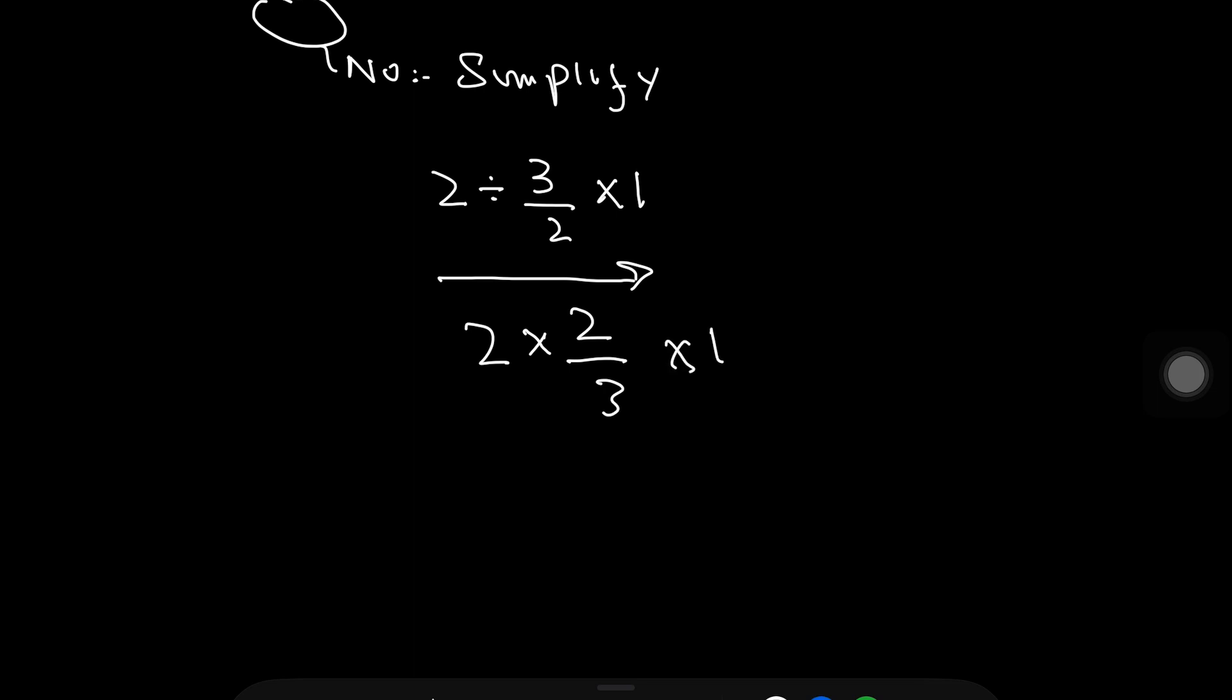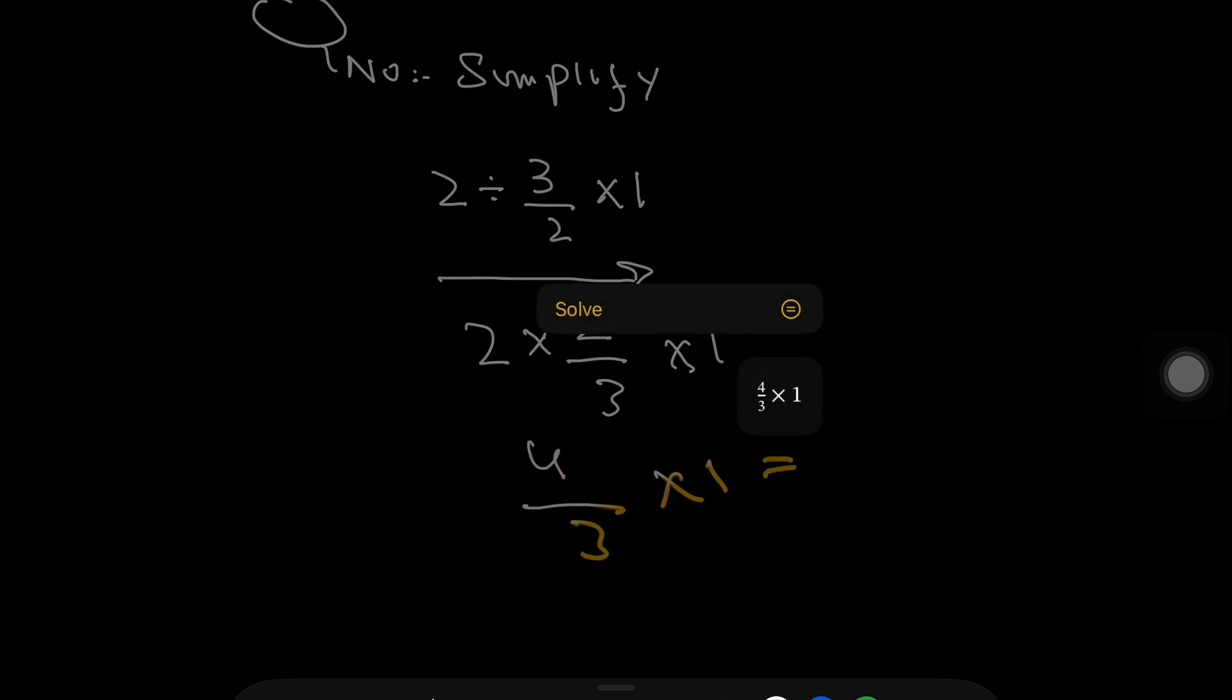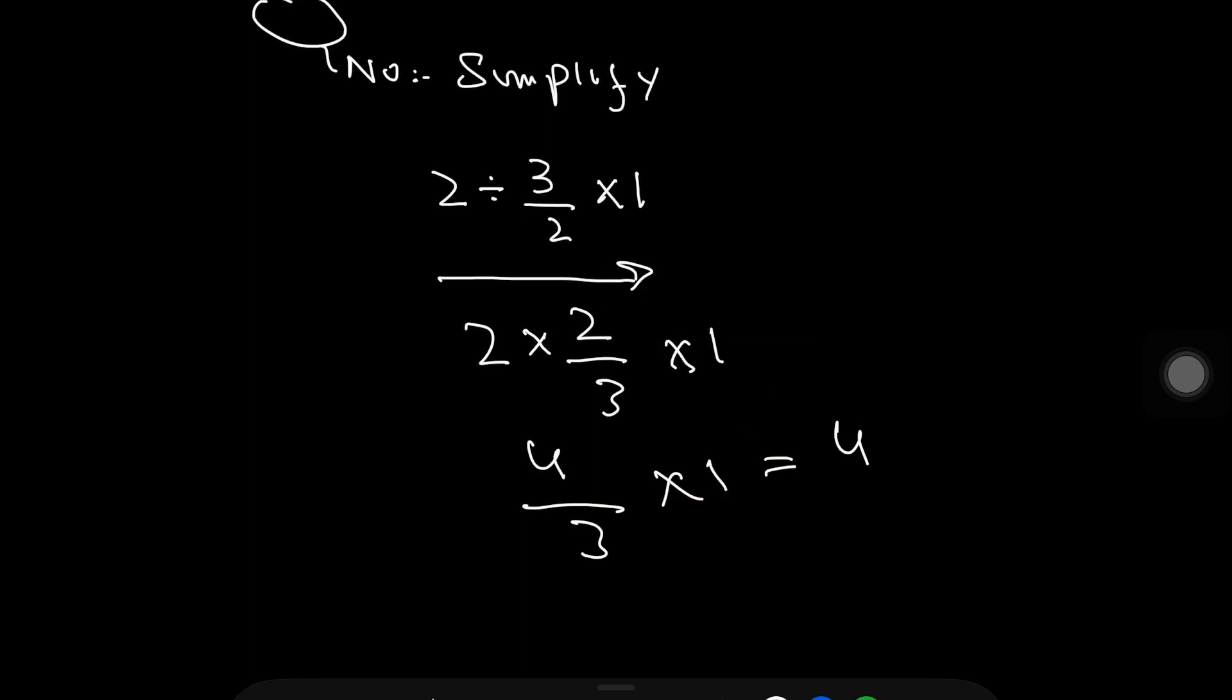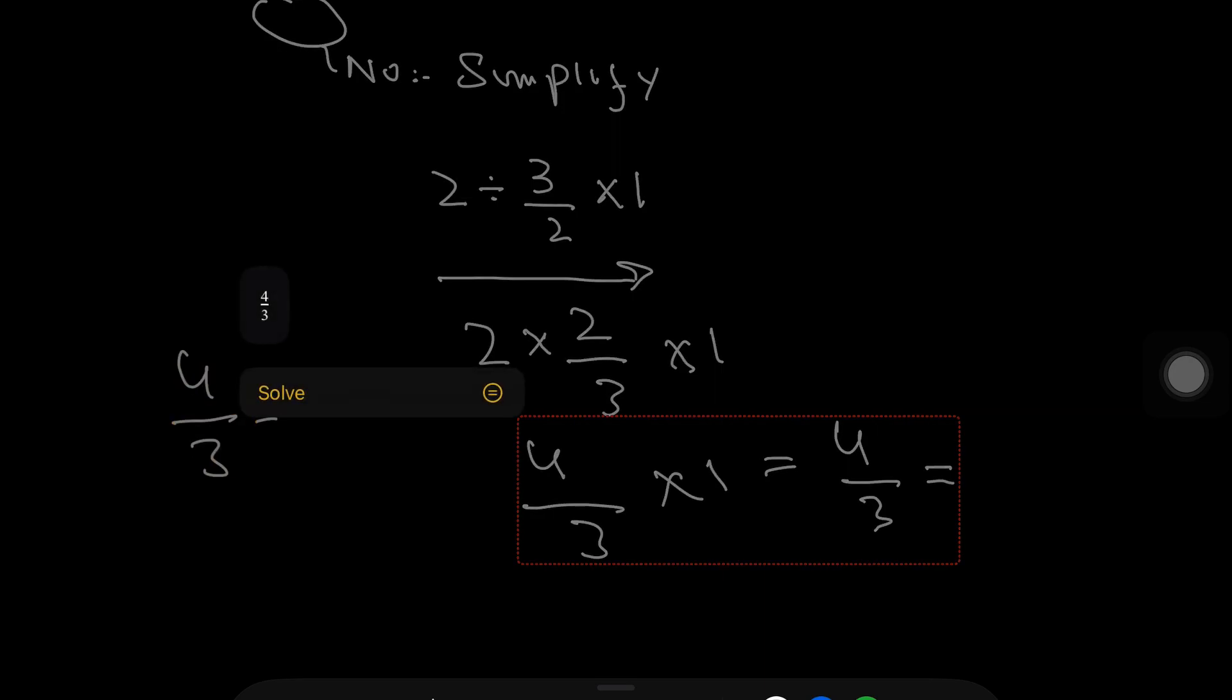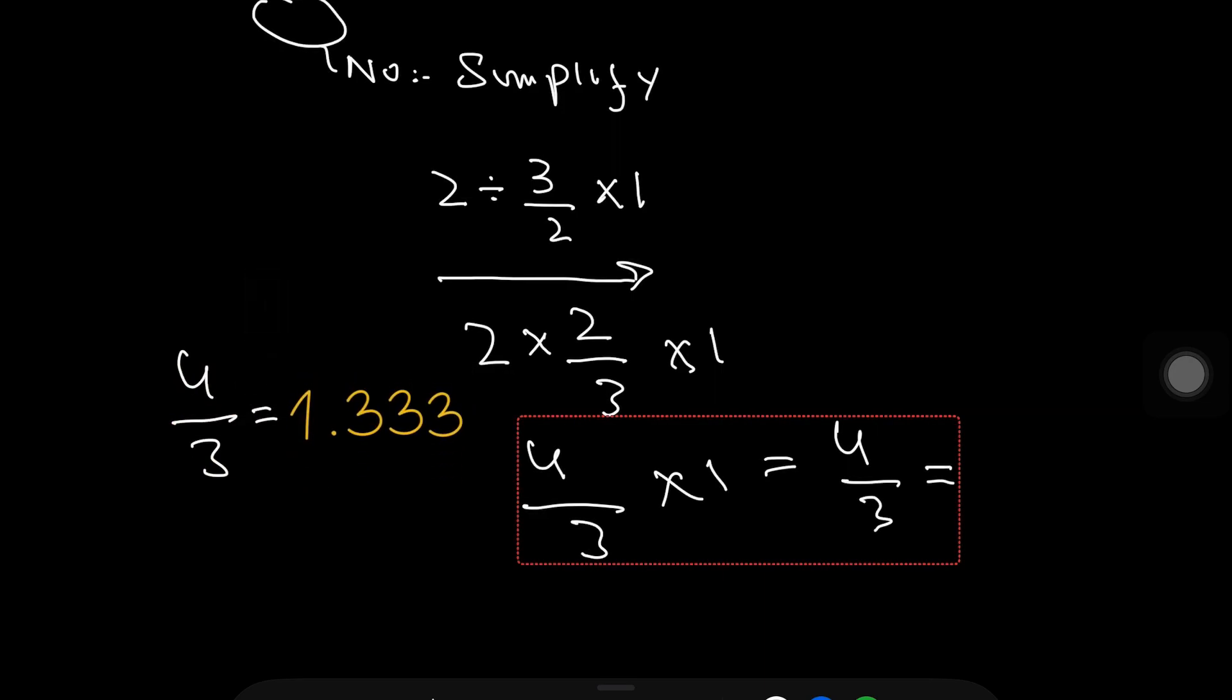2 multiplied by 2 is 4, divided by 3, multiply by 1. 4 divided by 3 equals 4 divided by 3, which equals 1.333.